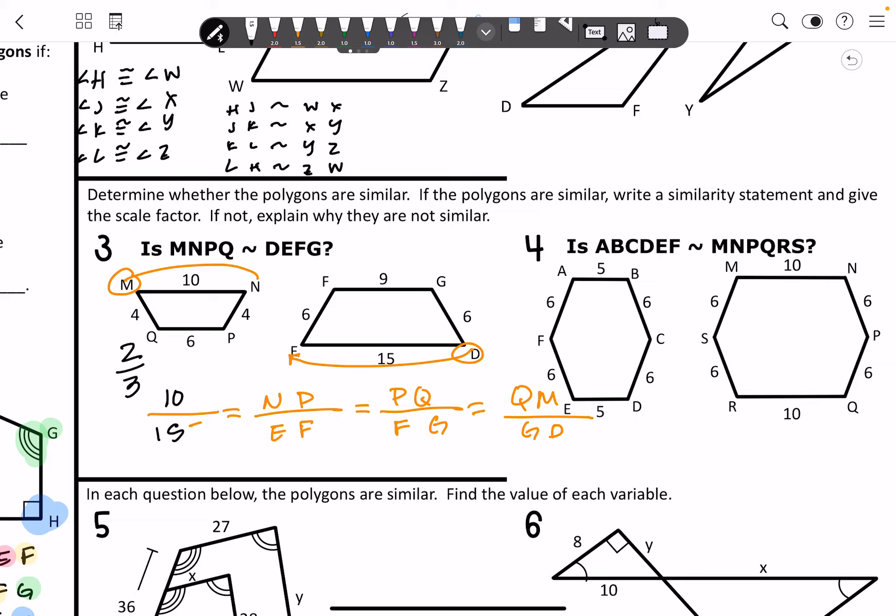If that's the case, then this will also be our scale factor. So we have to check that that's the case for NP and EF. So we've got 4 over 6. That simplifies to 2 thirds as well.